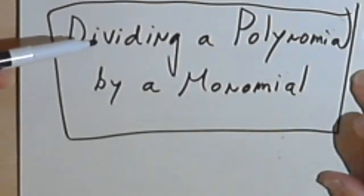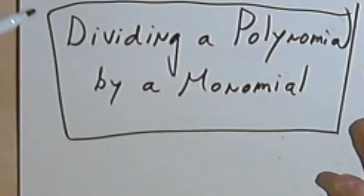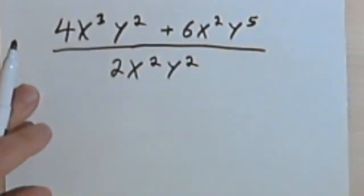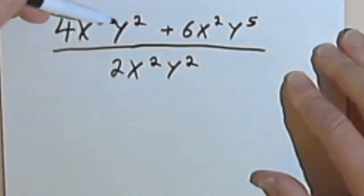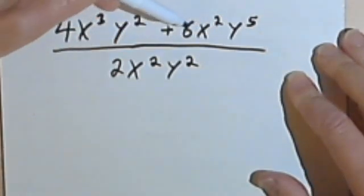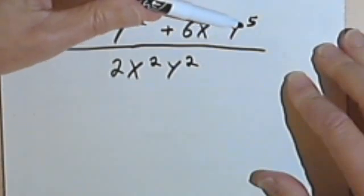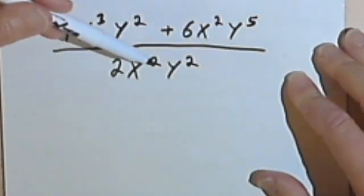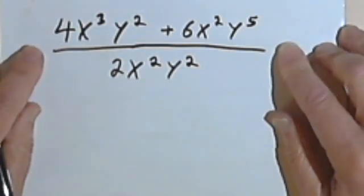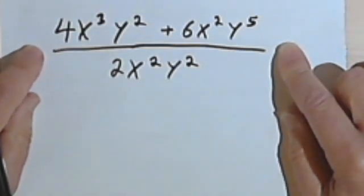This video is going to be about dividing a polynomial by a monomial. So let's take a look at these. Here we've got a binomial, 4x³y² + 6x²y⁵, all of that divided by 2x²y². Now at first this looks pretty complicated, but it really isn't that hard at all.